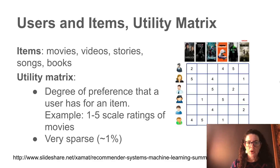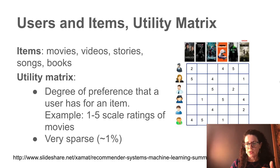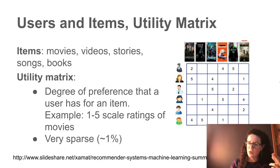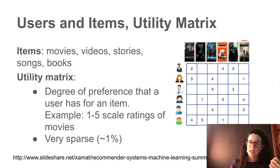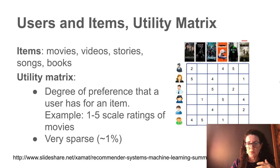In most of our discussion we'll focus on items and users, and in particular we'll think in terms of a utility matrix. This matrix has users in the rows and items — in this case movies — in the columns, with ratings as the values. Notice there are many blank entries because a user might rate only a hundred items while we have millions of movies in our database, so this matrix is very sparse.